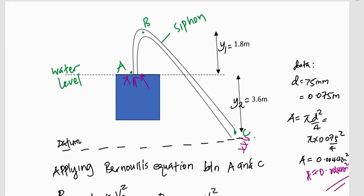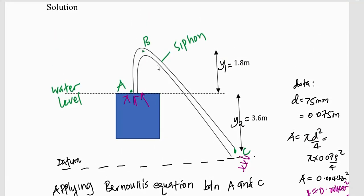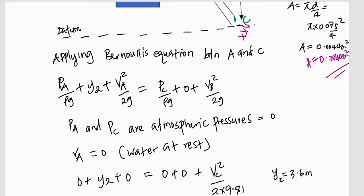Now, let us apply Bernoulli's principle between A and C. If we apply Bernoulli's principle between A and C, it means we can say it is P_A, the pressure at A, divided by rho G, plus. At the level, if we consider, by the way, the datum, if we consider the datum at C. So, it means if I want the potential energy per unit weight at point A, it will be the height above the datum, which will be y_2. So, it will be y_2. Then, what about velocity? The velocity, it will be velocity at A. So, it will be V_A squared out of 2G.